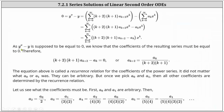Remember, we know that y double prime minus y is supposed to equal zero, and therefore the coefficients of the resulting power series must equal zero. Looking at the power series above, the coefficients are the quantity k plus two times the quantity k plus one times a sub k plus two, minus a sub k, which must equal zero. Solving this equation for a sub k plus two, we have a sub k plus two equals a sub k divided by the product of k plus two and k plus one. This equation is called a recurrence relation for the coefficients of the power series.